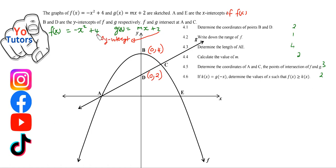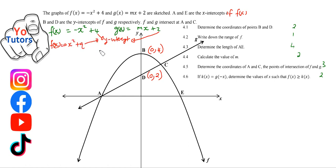We pick these values from the general equation f(x) = ax² + q, where q is the y-intercept. That's what we need to know here.